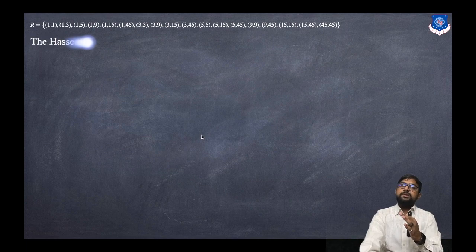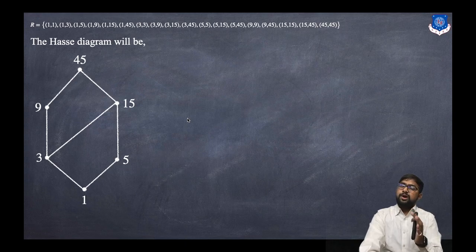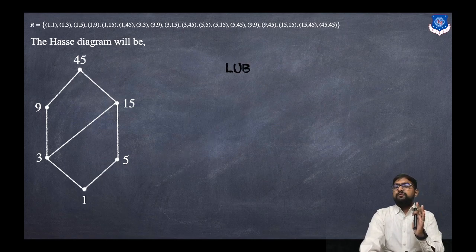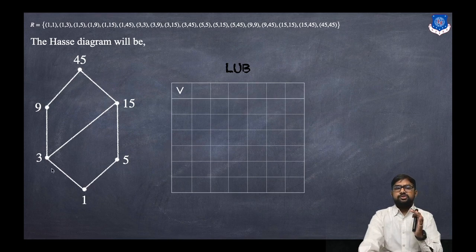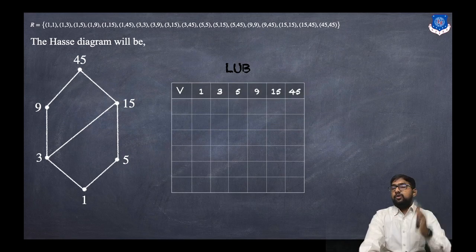We have drawn the Hasse diagram from this relation. If you don't know how to construct a Hasse diagram, refer to previous videos. Now we will create the LUB table. There are six points: 1, 3, 5, 9, 15, and 45, written in both rows and columns.